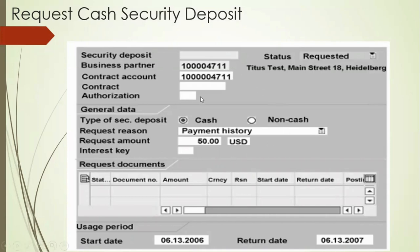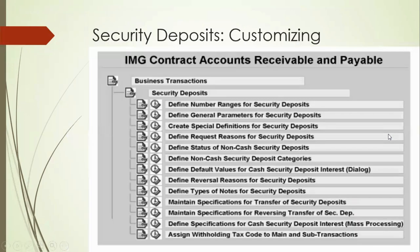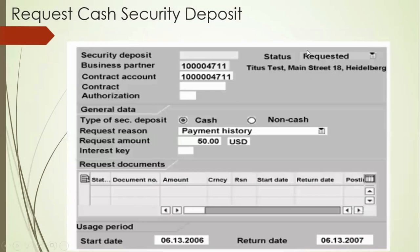Now this is the SAP screen — you can do it like this. This is the customization for how the security deposit needs to be linked. When you are creating a security deposit, you need a number range, you need the parameters for why you are putting the security deposit — cash or non-cash — and what are the types of non-cash security deposit categories you can collect, like bond, bank guarantee, or any affidavit. Those non-cash security deposit categories you need to put, and you can put notes as well, like when you are collecting the amount.